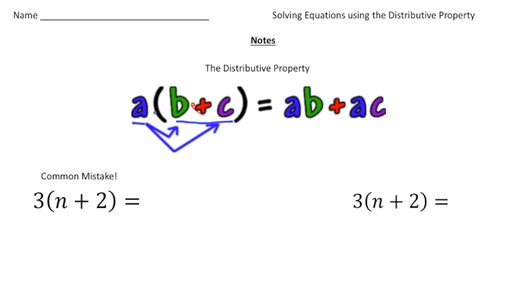So if you notice, A times B plus C equals AB plus AC. And what's happening is this A is being multiplied by the B. That's how we get the AB. And then this A is also being multiplied by the C. And that's how we get the plus AC.